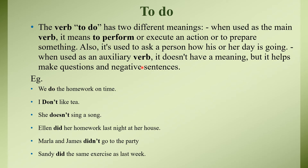The verb 'to do' has two different meanings. When used as a main verb, it means to perform or execute an action, or to prepare something. So when we use do, does, or did as a main verb, it stands alone and has its own meaning. For example: 'We do the homework on time' — here 'do' means 'karte hain', we perform the action. But when used as an auxiliary verb, it does not carry a meaning of its own.